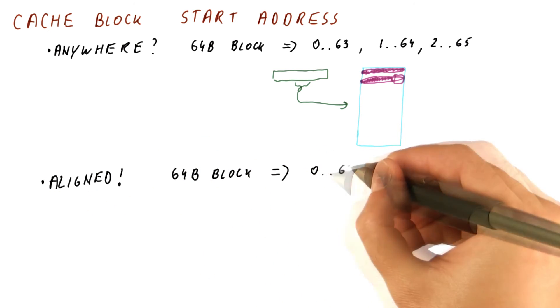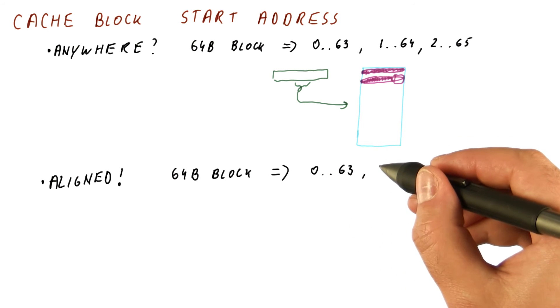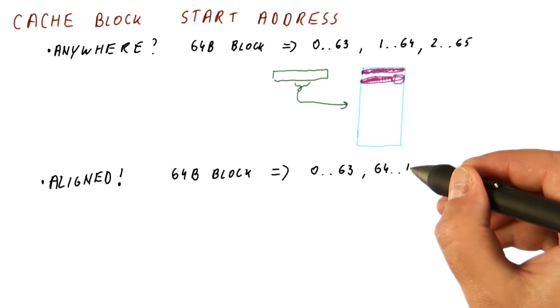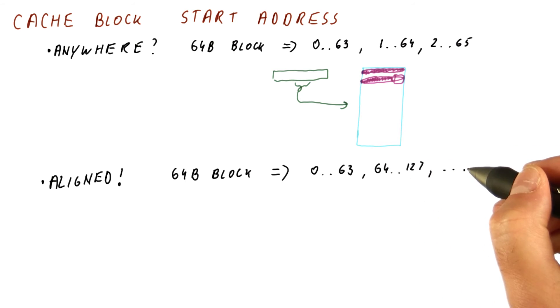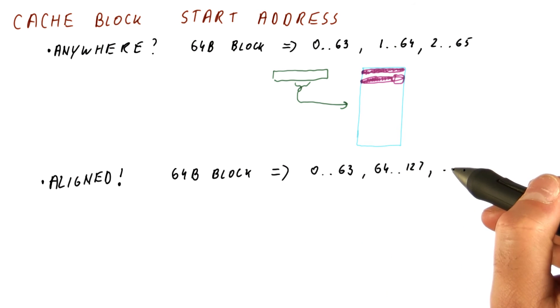So for a 64 byte block, we will have a block that contains data from 0 to 63 bytes. The next block begins at byte 64 and goes to 127, and so on. So any byte address can be found in only one of the possible blocks.